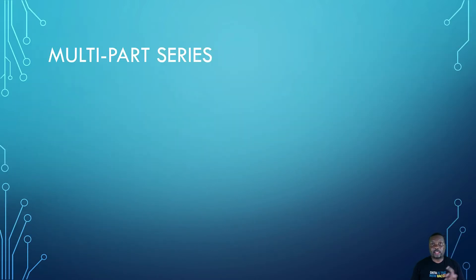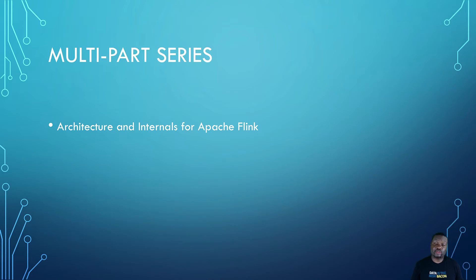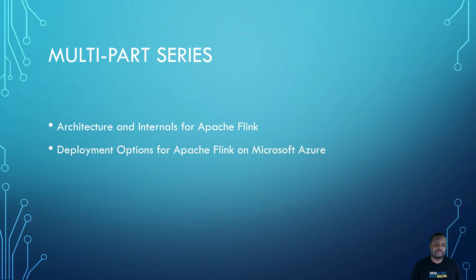It's going to be a multi-part series. We're going to talk about the architecture and internals for Apache Flink as it pertains to using it for event stream processing to handle real-time as well as some of the batch workloads that customers and partners on Microsoft Azure are doing.